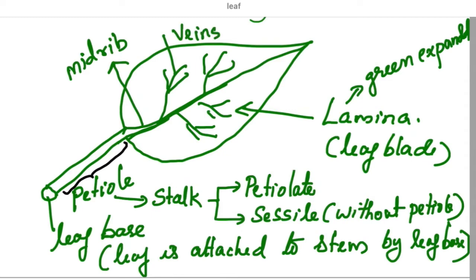What is the role of midrib and veins? They conduct water and minerals. They also provide rigidity to the leaf. Veins give rigidity to the leaf and also help in transport of minerals and water.